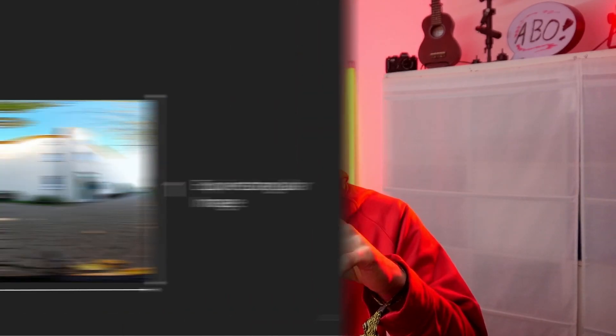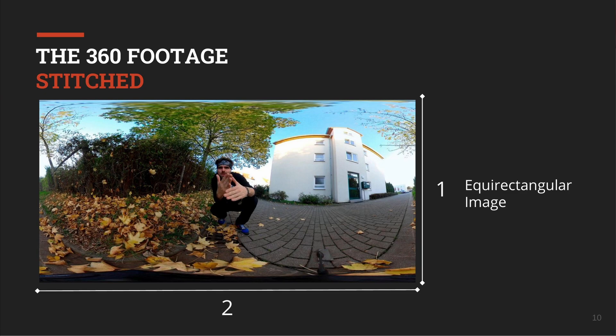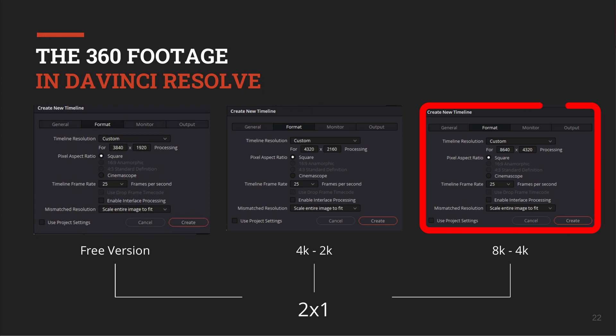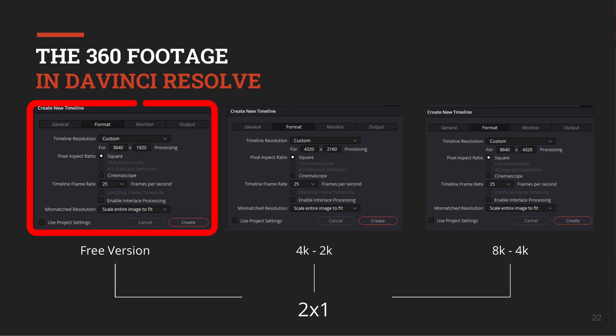For a normal 360 video, you have an aspect ratio of 2-to-1 — meaning it's twice the width of the height. In DaVinci, it's usually 4K by 2K or 8K by 4K. If you have the free version, you can do a 4K by 2K mixdown as well, but with the Studio version you can output as much resolution as you want. I highly recommend getting the Studio version, especially if you want to create VR videos.